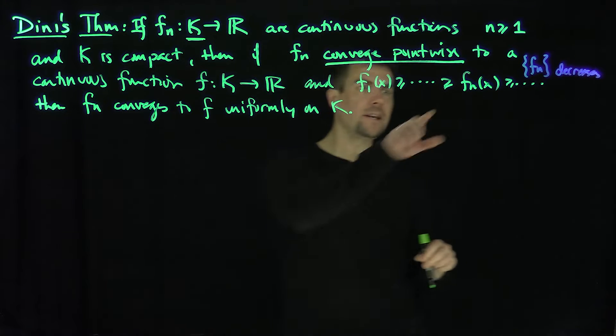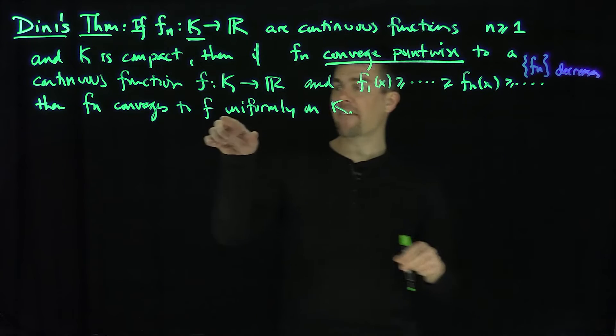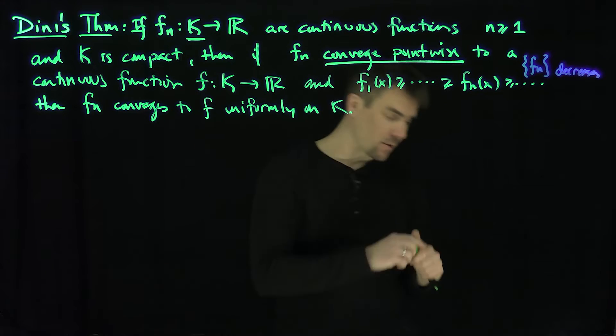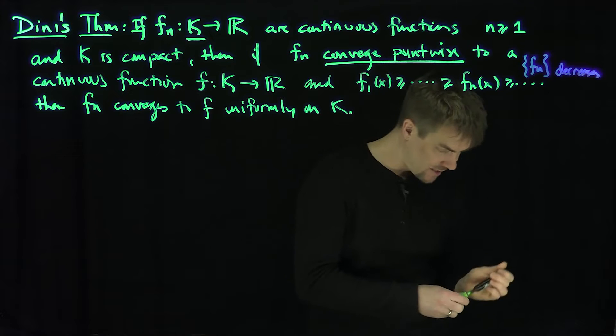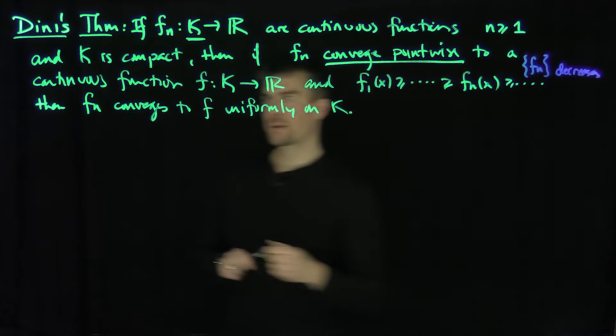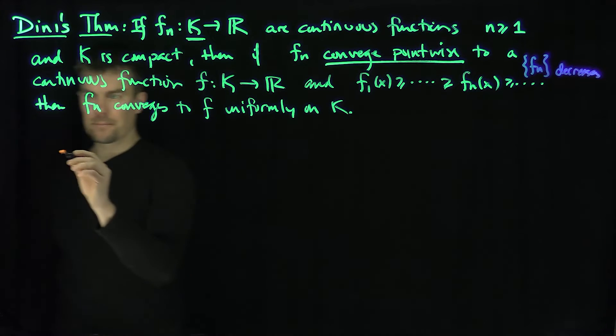What we know is that each of these f_n has to be bigger than or equal to f because the sequence is decreasing. So that's going to give us the key observation of our proof.